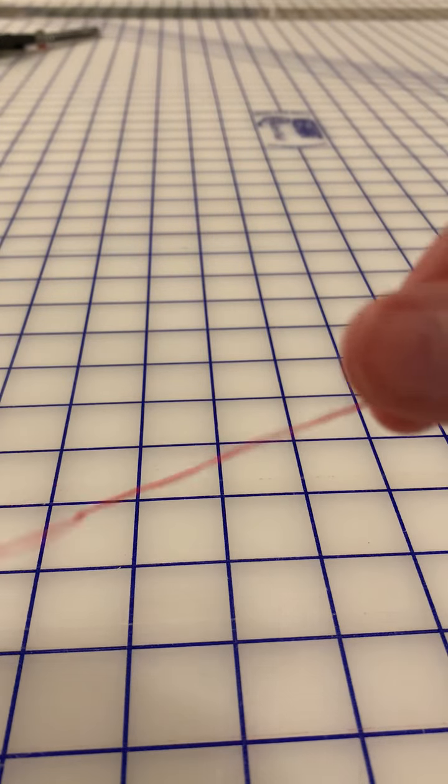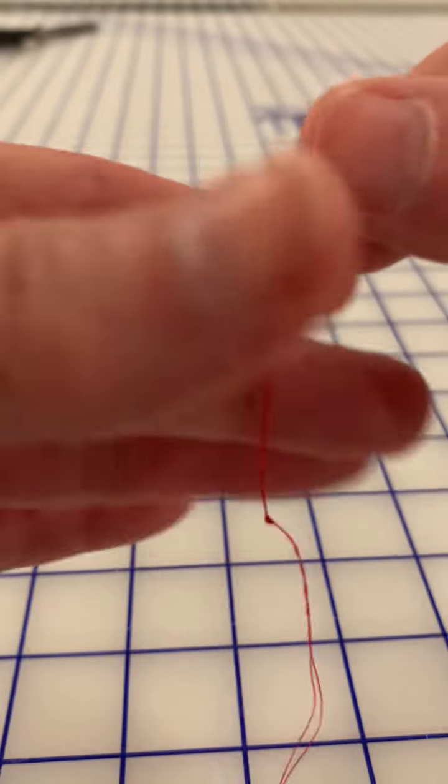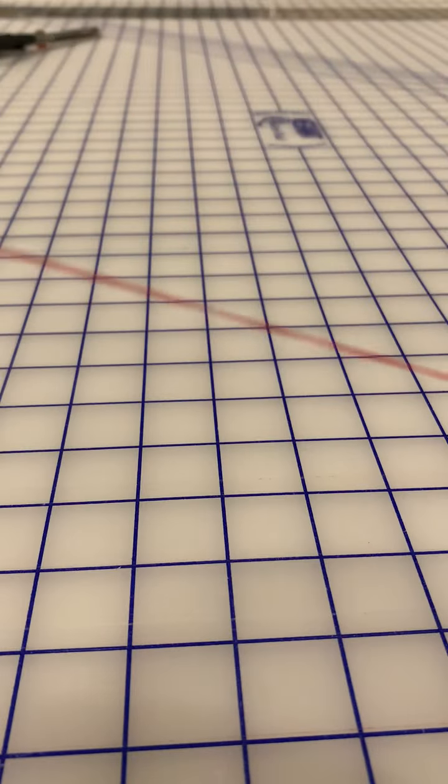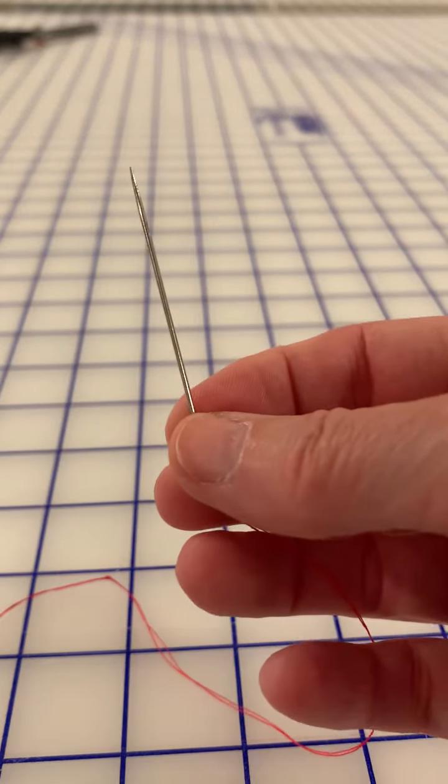You're just going to gently pull that closed. You don't want to pull it too tight. Tight enough that the knot stays in place, but not so tight that it's going to pull through your fabric, and now you are ready to sew your no sew zone closed.